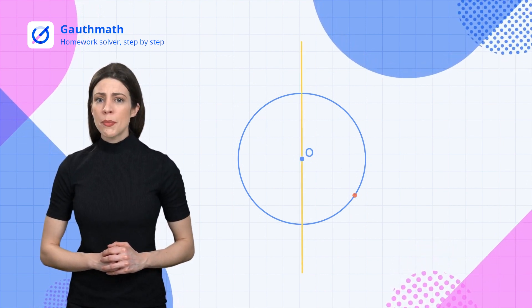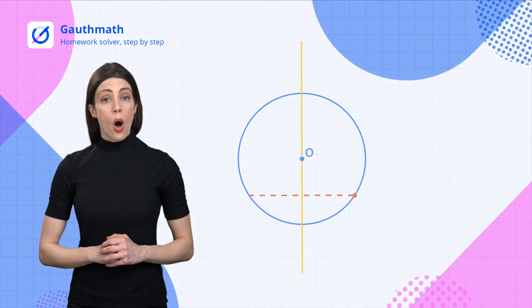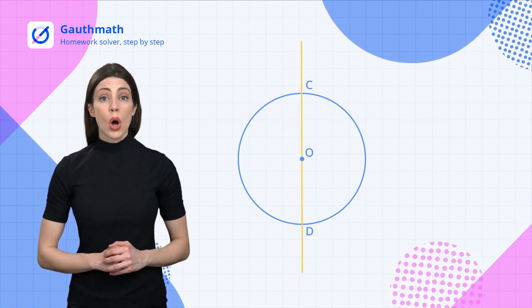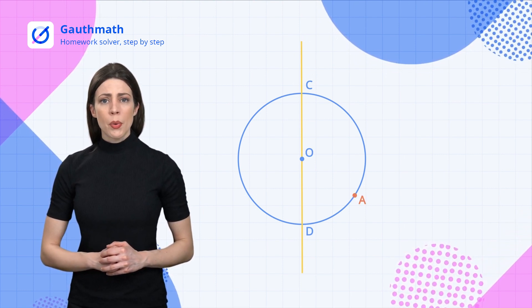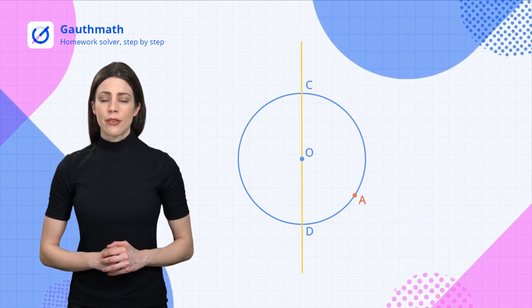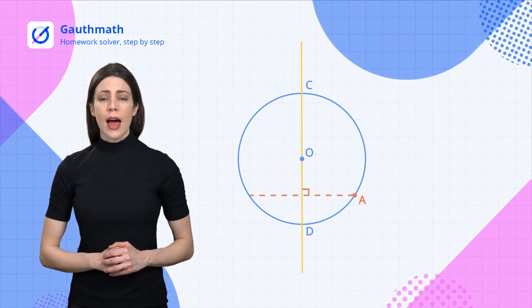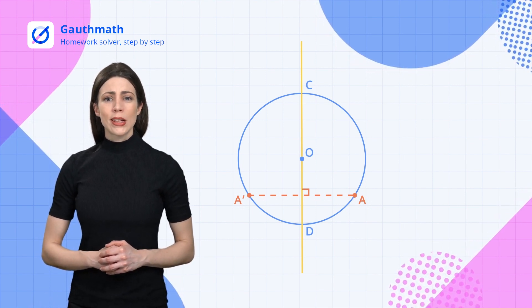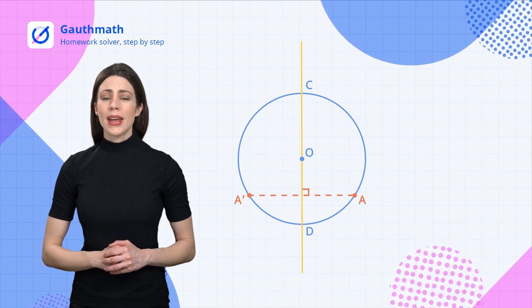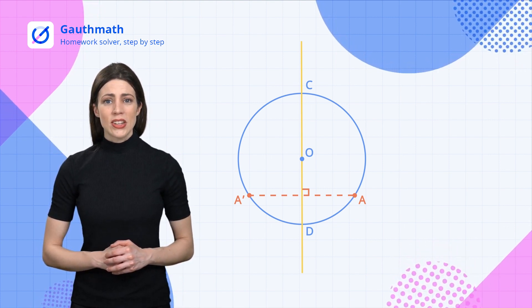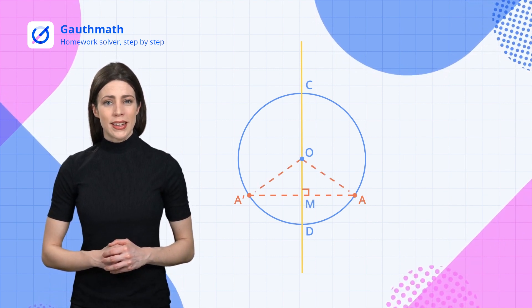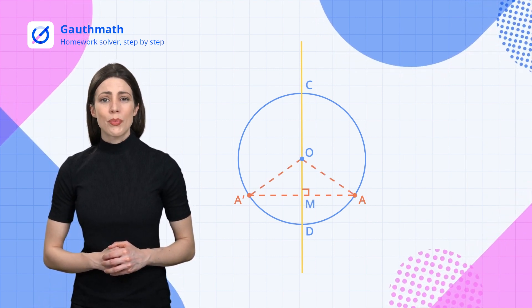Suppose CD is a diameter of circle O. A is any point on circle O other than point C and D. From point A, construct a line AA' which is perpendicular to the diameter CD and intersect the circle at point A'. The intersection point of CD and AA' is M. Connect OA and OA'.